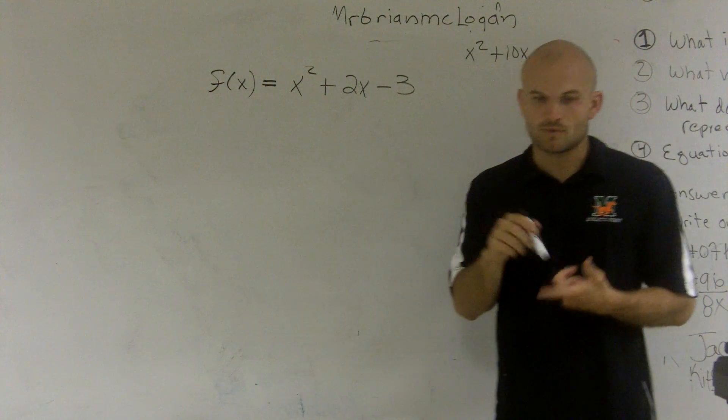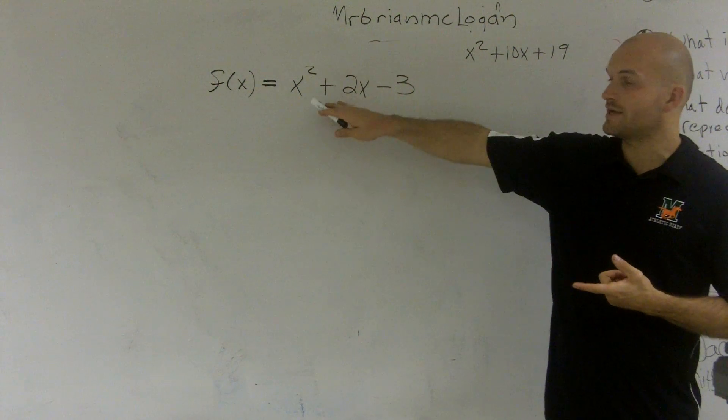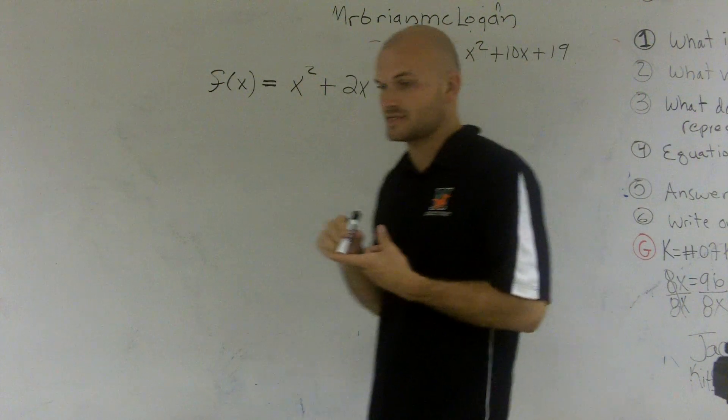So when we're completing the square, what completing the square helps us do is that one thing, it gets us into the standard form of a quadratic equation. So it puts us in the standard form, which is very helpful when we're trying to identify the vertex.